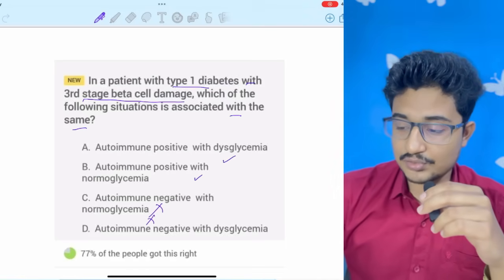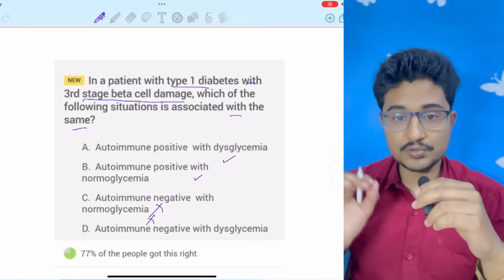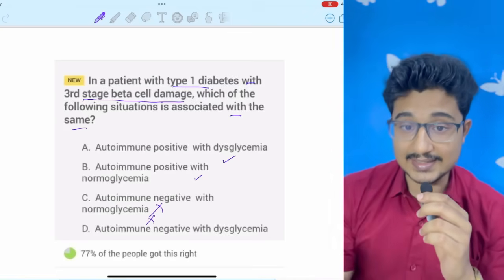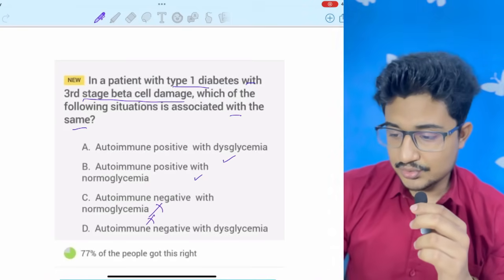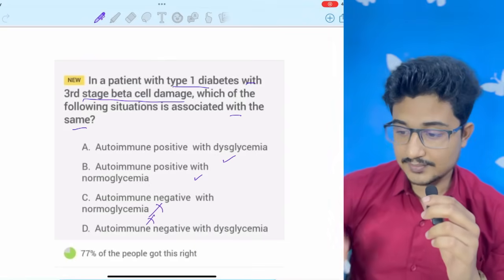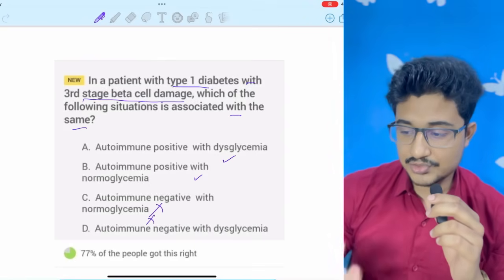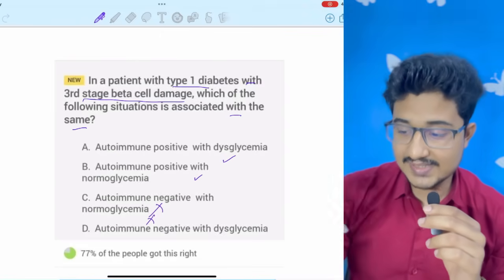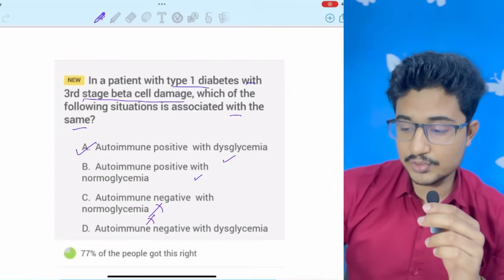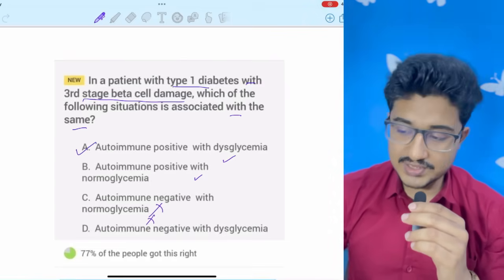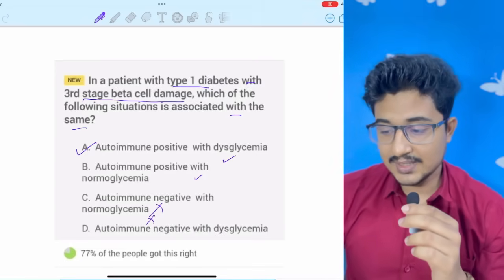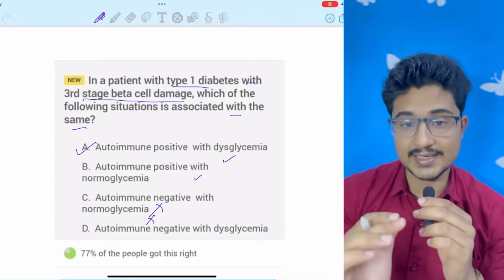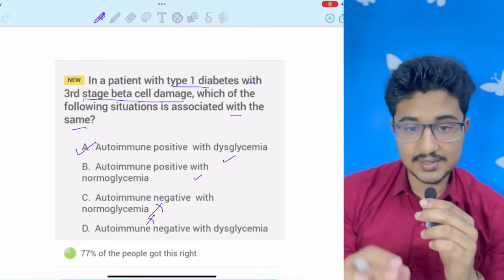Now, I am left with two options. Now, I have to make an educated guess so that my probability of getting this answer correct increases. So, this is in stage 3. Not in stage 1 or 2. So, I think that dysglycemia will happen. And it should happen because it is in stage 3. And I am going to go with autoimmune positivity and dysglycemia. Like this, with limited knowledge, you have to mark an educated guess when you have ruled out two options.